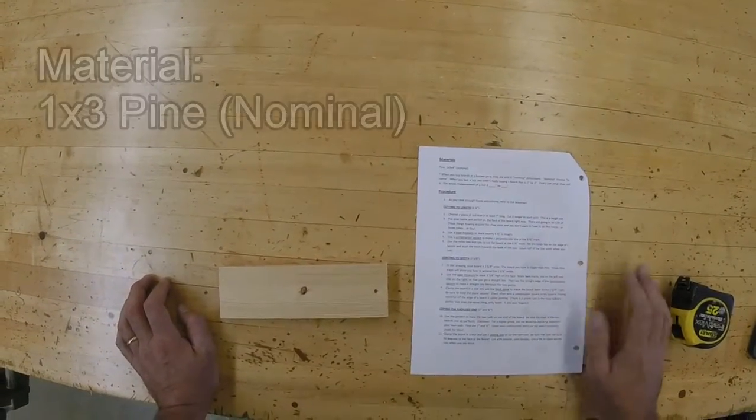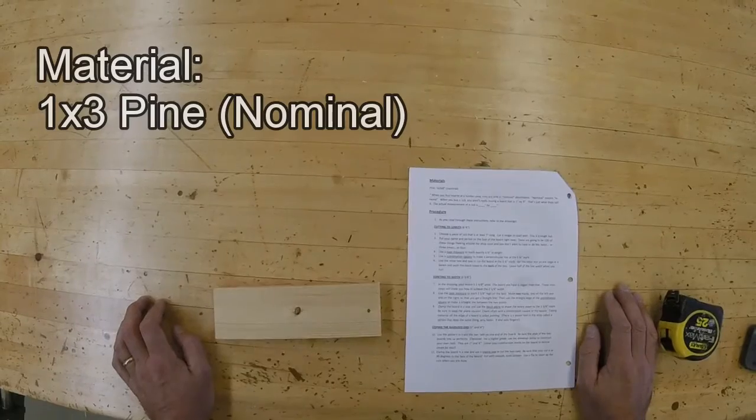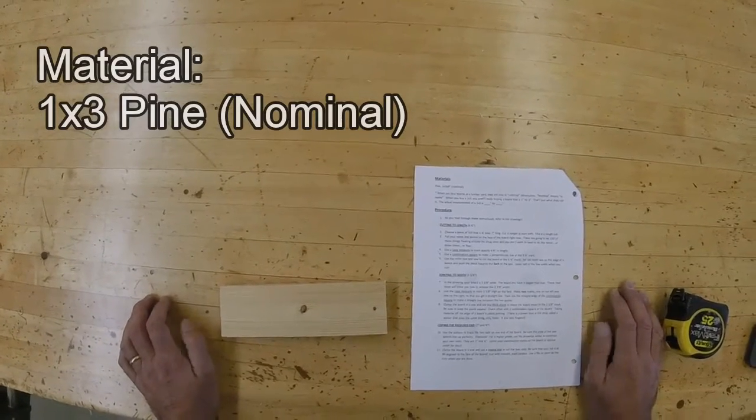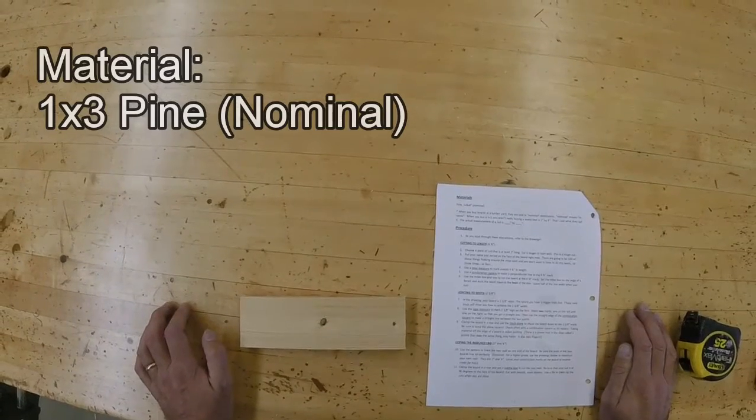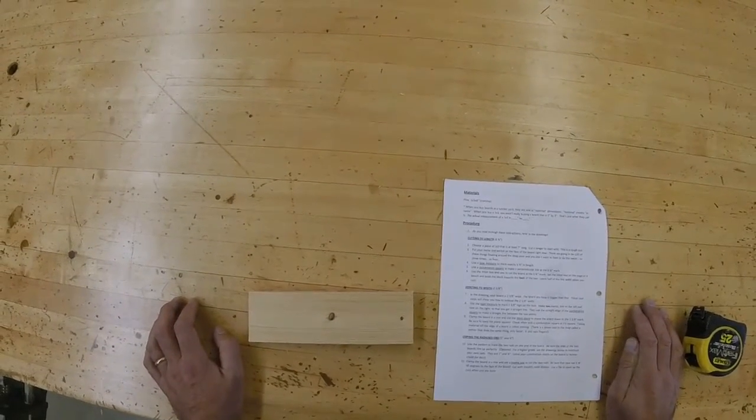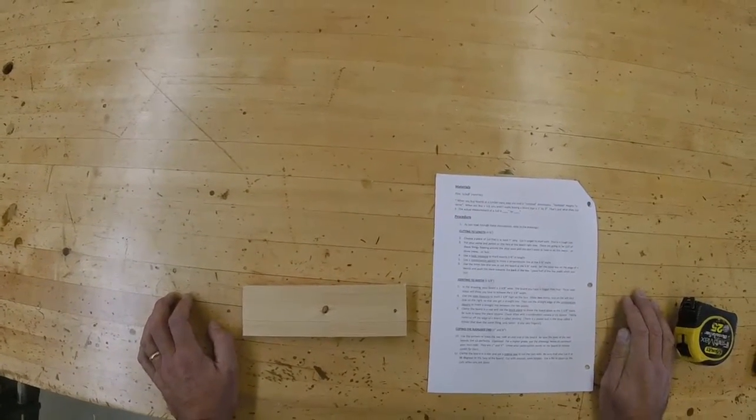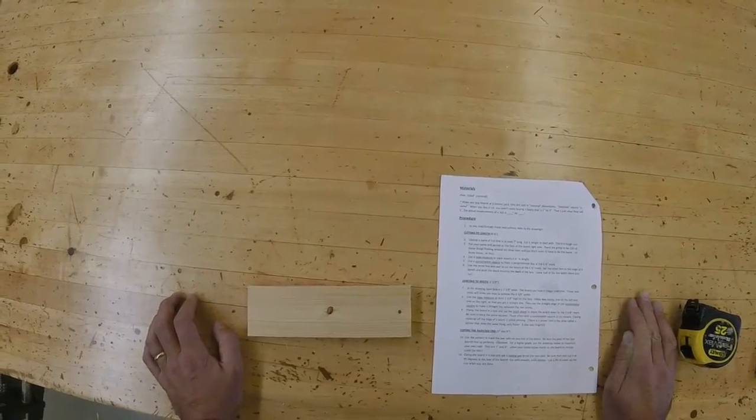The materials for this project will be a piece of pine that's 1x3x8. That's a nominal measurement. When you buy boards at a lumberyard, they're sold in nominal dimensions. Nominal means in name. When you buy a 1x3, you aren't really buying a board that is 1 inch by 3 inches. That's just what they call it.